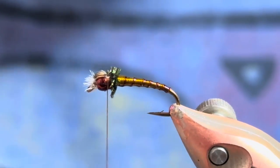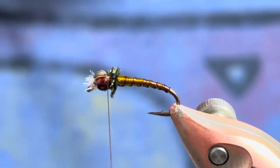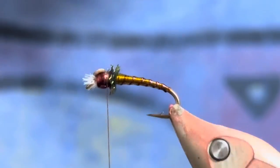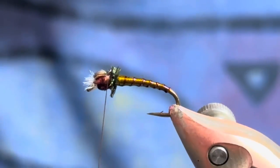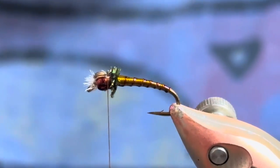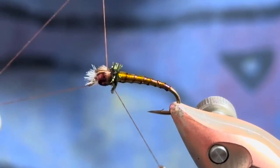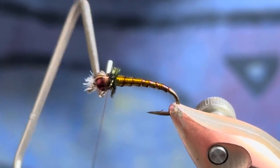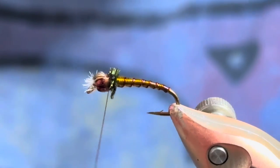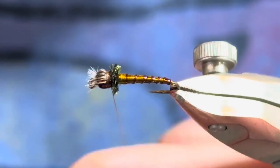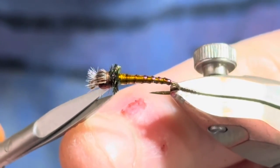Now what I'm going to do is actually spin my bobbin clockwise to cord it up. I just do that because it allows me to kind of sneak a whip finish in behind there with a super thin diameter instead of being wide and matting down that herl. It allows you to get right in there.